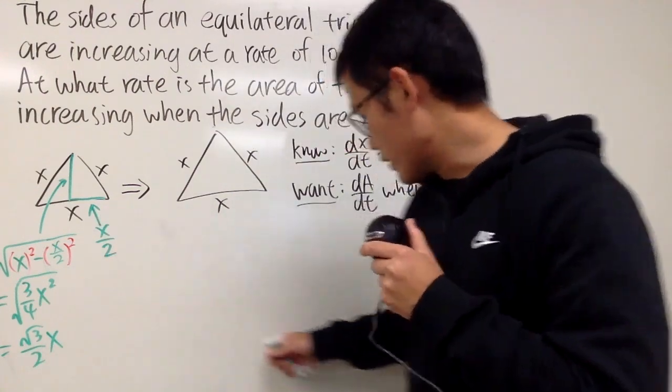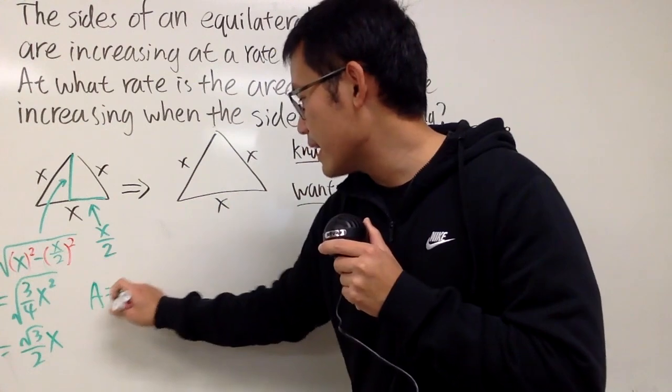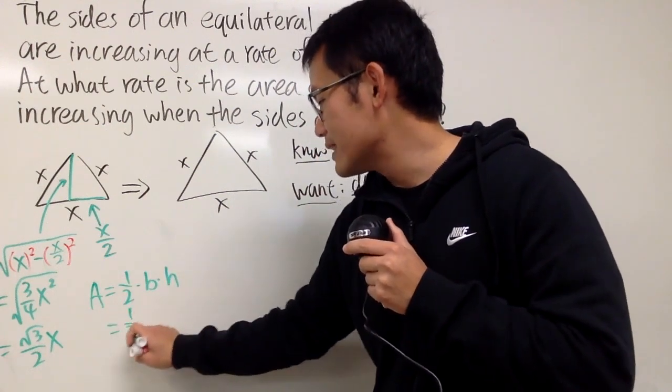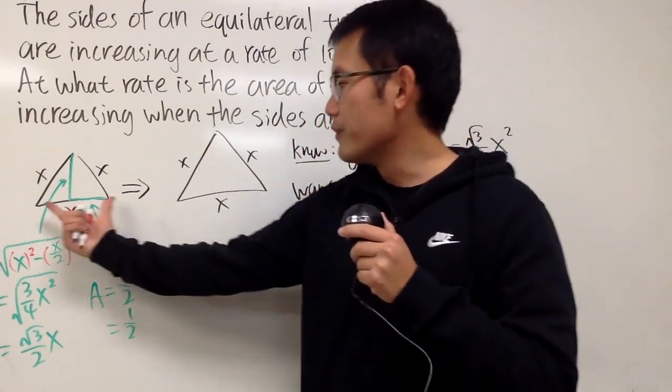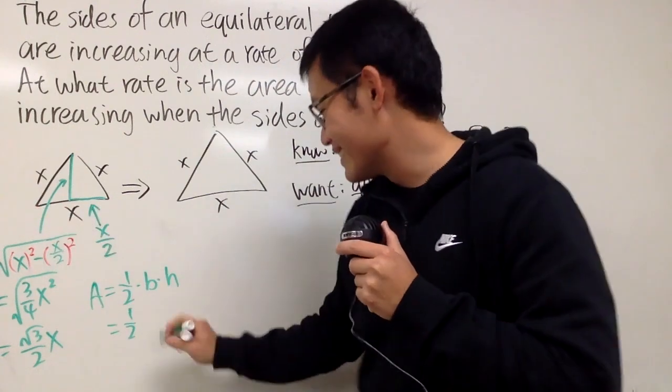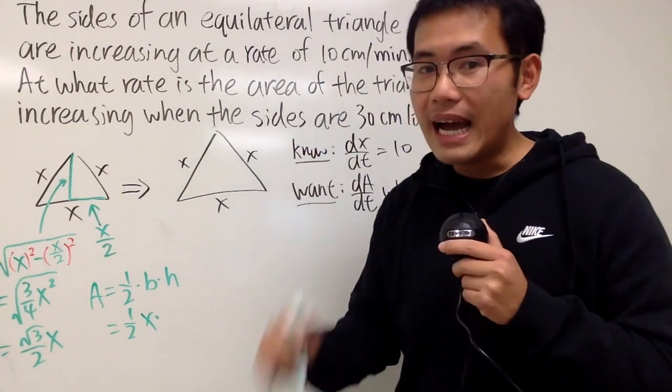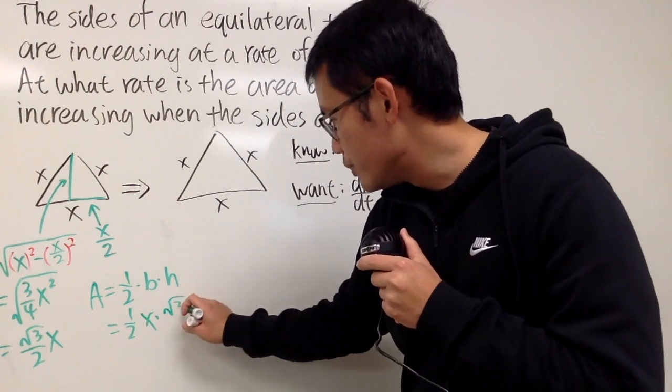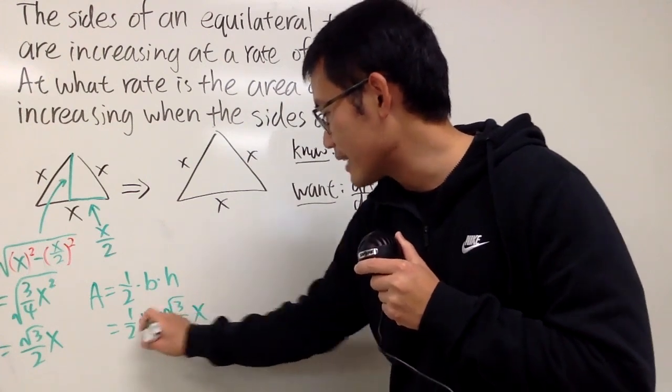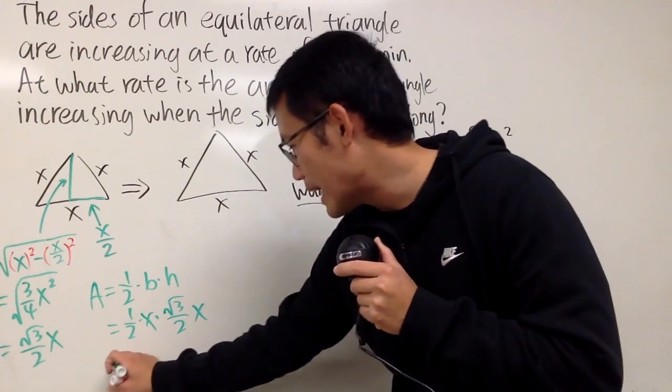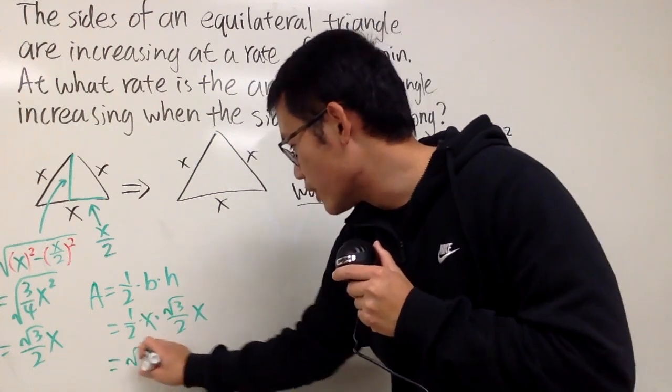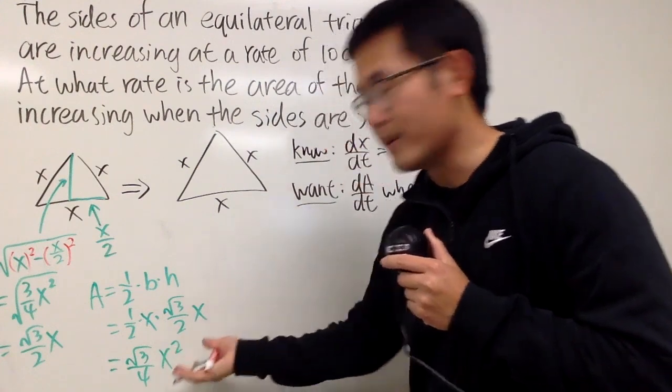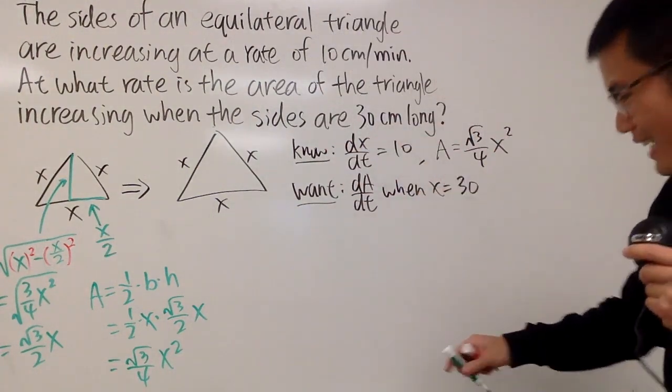Now, the area, of course, we need to get 1 half times base times height. 1 half is the 1 half. The base of the original triangle is X. Right? So we have X. And the height is this. That's why we need to find that. Which is square root of 3 over 2 times X, like this. We'll multiply this out. This times that is square root of 3. This times that is 4. And X times X is, of course, X squared. So that's the idea for that.